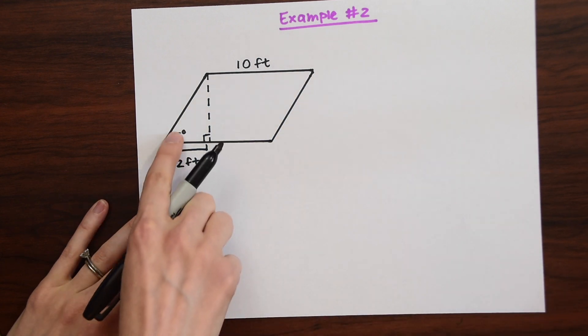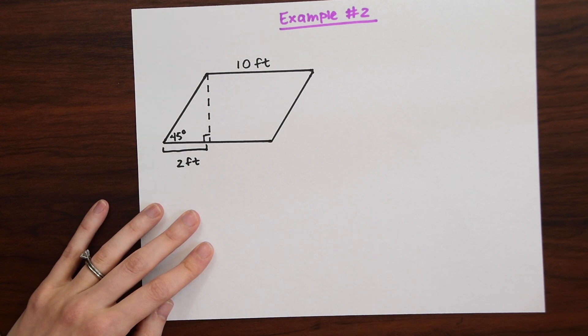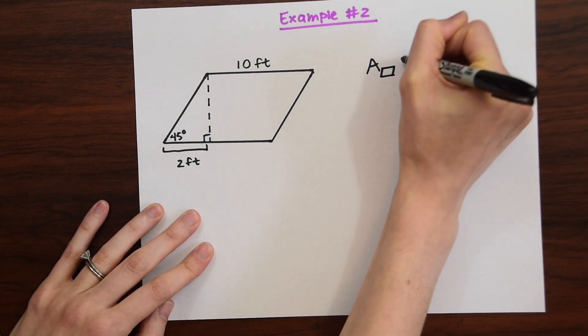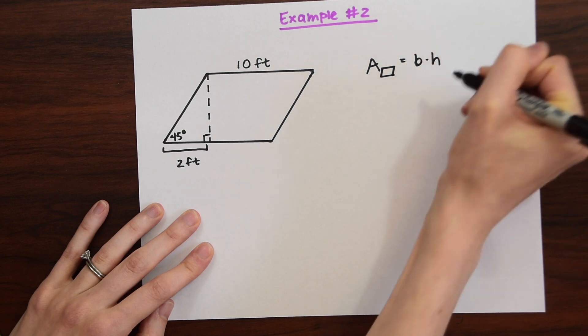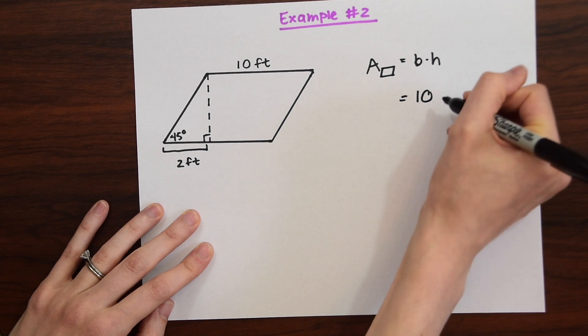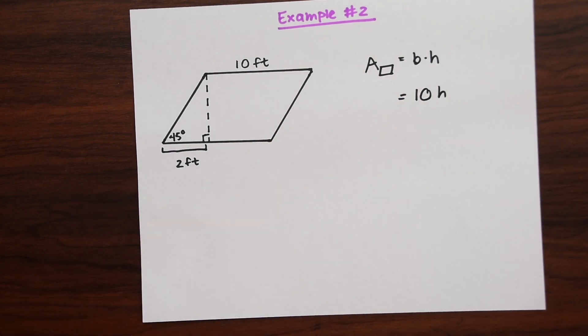We're not sure what the height is yet. We aren't given that. But we're given that this is 45 degrees and then this little piece right here is 2 feet. So I'm just going to write out the formula. The area of the parallelogram is B times H. So far we know that B is equal to 10.